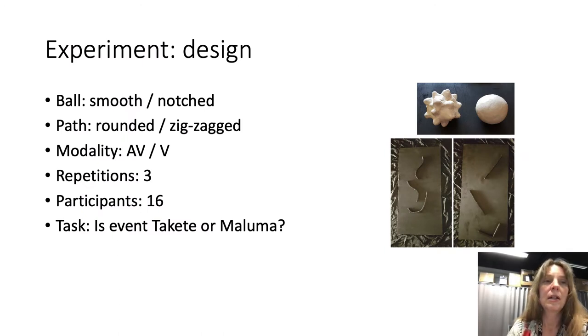Anyway, these were the factors that were manipulated. The ball was either smooth or notched. The path was either rounded or zigzagged. And we hypothesized that the notched and the zigzagged conditions would cause more takete responses. So we called them the takete conditions and the other two then the maluma conditions.